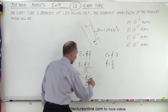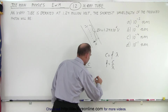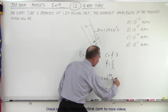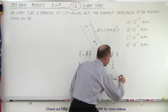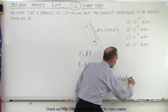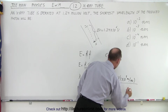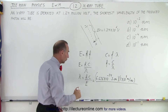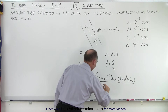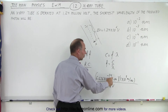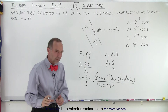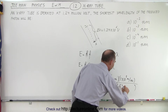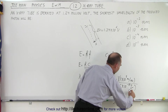All we have to do is plug in the numbers. H is 6.626 times 10 to the minus 34 joule-seconds — that's Planck's constant — times the speed of light, 3 times 10 to the 8 meters per second. The energy, since the electrons are accelerated across delta V, is 1.24 times 10 to the 6th electron volts. But since the other values are in joules, electron volts must be converted to joules using 1.6 times 10 to the minus 19 joules per electron volt.